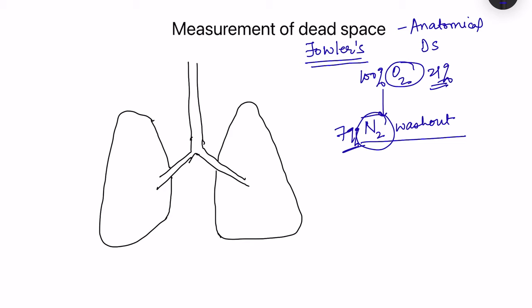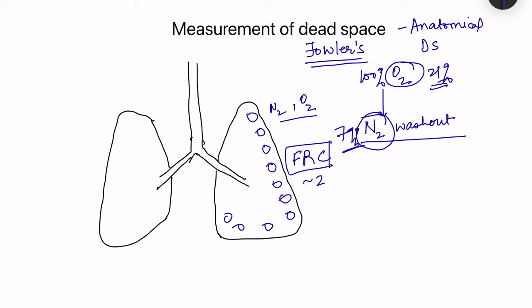When inhaling atmospheric air, the alveoli contain both nitrogen and oxygen. The amount of air present in the lungs at tidal expiration is the functional residual capacity, which is approximately 2.3 liters. In this 2.3 liters there is a mixture of nitrogen, oxygen, and some carbon dioxide. This air is filled everywhere — in the alveoli and in the respiratory passages.